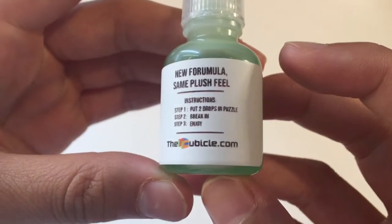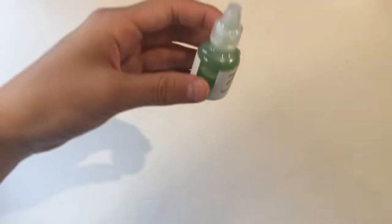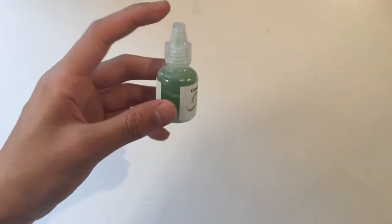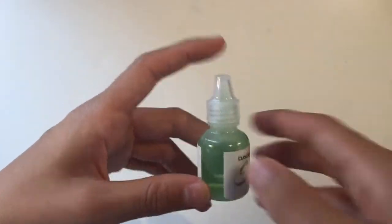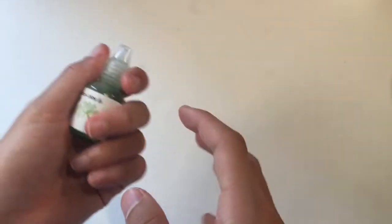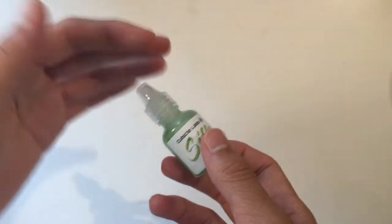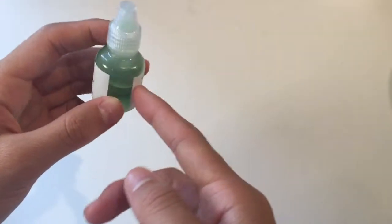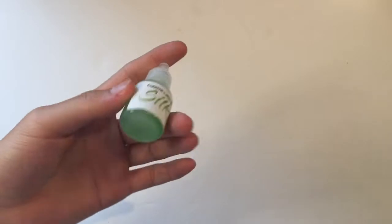Instructions, step one, put two drops in a puzzle. Step two, break in. Step three, enjoy. So, it's pretty basic for a lubricant. One thing I do notice is that this is 10cc's, but the thing isn't actually filled up all the way, which is a little strange. I've never had 10cc of a lubricant. I usually get 3cc's because I don't set up my cubes that heavily. I just put a few drops in and that's it. So, I don't know if this is how it usually comes or what. But, I'm going to just put this in some cubes and see how I like it.